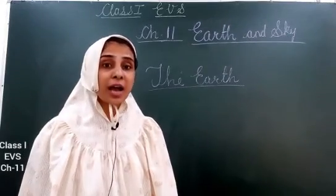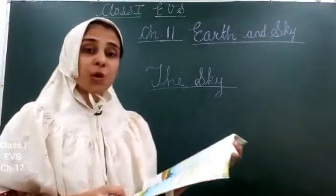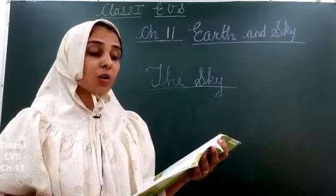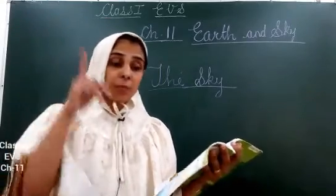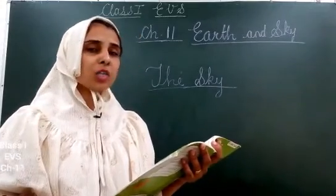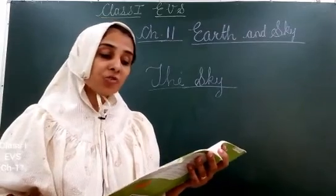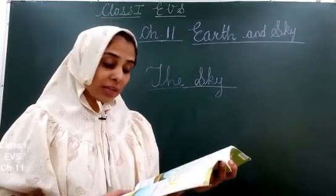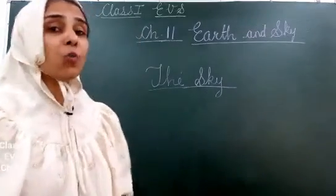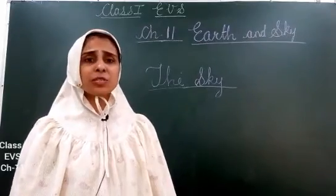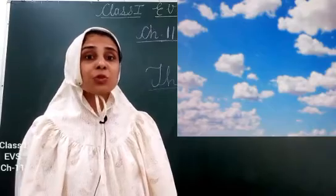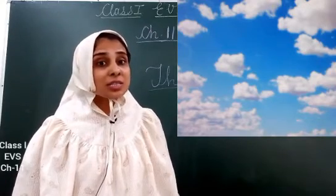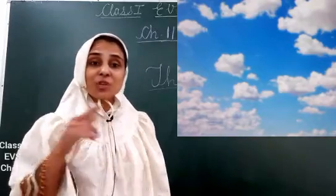Now we will learn about the sky, on page number 139. Go to an open space such as a park or a terrace and look up at the sky. What do you see? You will see a vast blue sky with clouds of different shades. In the daytime you will see the sun, and in the night you will see the moon and countless stars. So when you go out and look up, it is all blue — that is the sky.